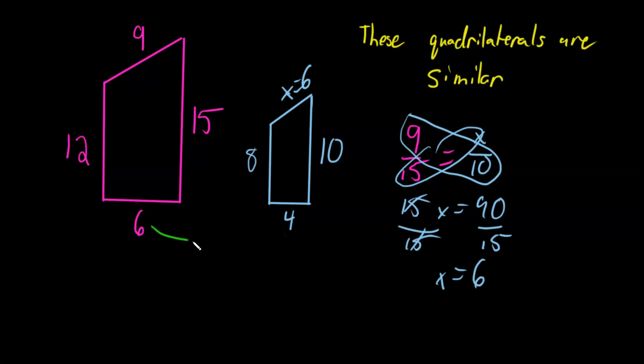So going from 6 to 4, 6 times what gives me 4? So 6 times x equals 4. Divide by 6 on both sides. These cancel each other out. So we end up getting x is equal to 4 over 6. And we can divide both of these by 2 to simplify. And we end up getting 2 over 3.